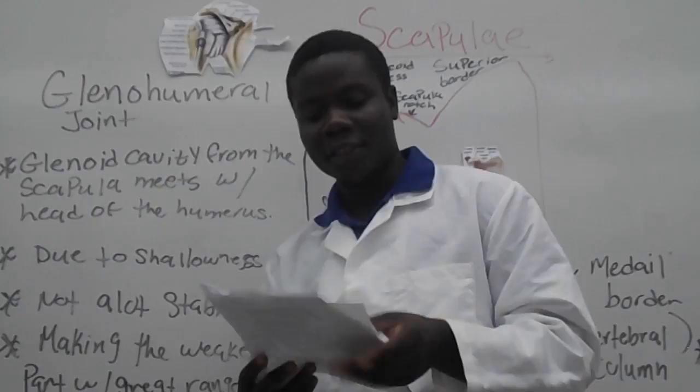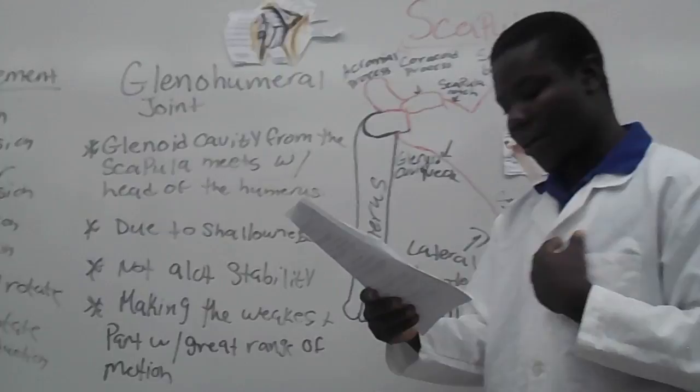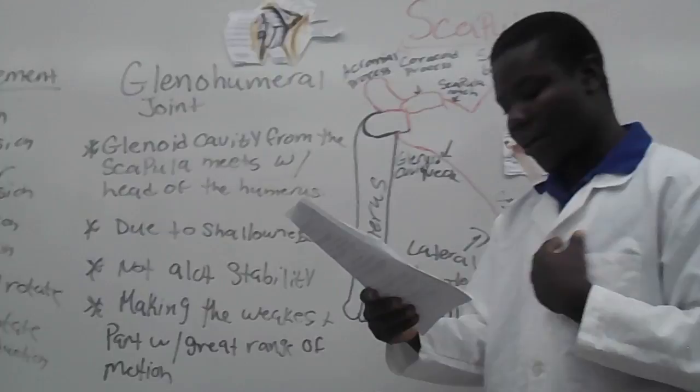I think what occurred to Fred is that because the glenohumeral joint is not stable, when the beam fell down on him, it dislocated his shoulder — and that is why his clavicle was not affected by the injury.